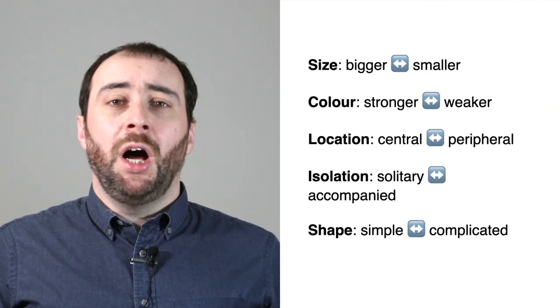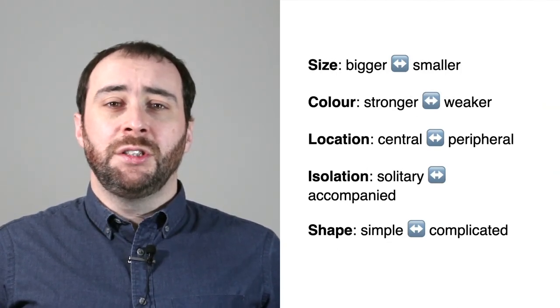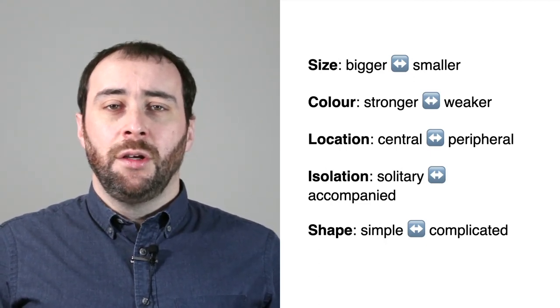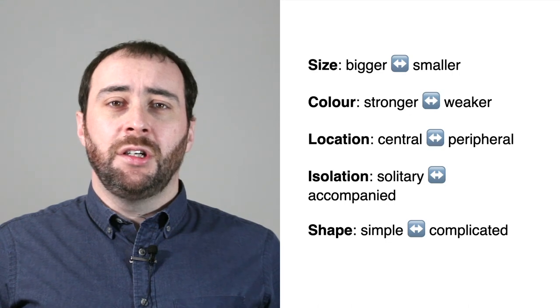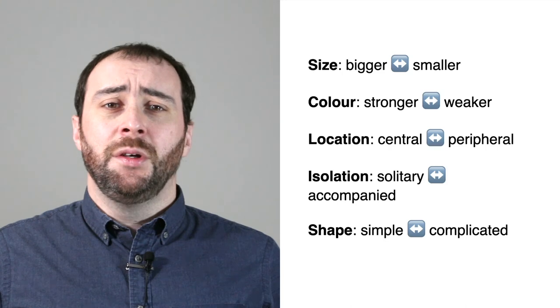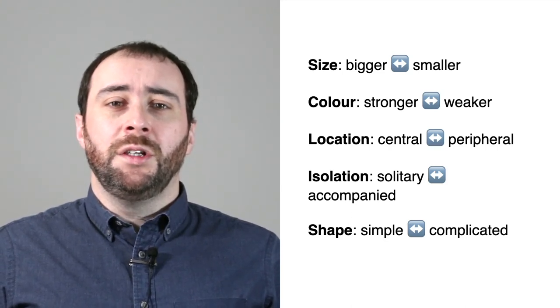We can establish a visual hierarchy on maps by varying the properties of each map element. We can vary size, with bigger elements being higher up the visual hierarchy — they appear more important versus smaller elements. We can also vary colour: stronger colours, more intense or brighter colours, but sometimes darker colours depending on what they're contrasted to, will appear more visually striking than weaker colours.